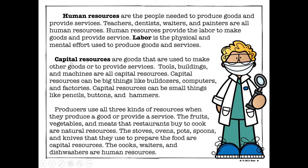The last kind is kind of like everything else — it's called a capital resource. Capital resources are goods that are used to make other goods or to provide services. Basically, if it doesn't come from nature and it's not a human, it's a capital resource. Tools, buildings, and machines are all capital resources. Capital resources can be big things like bulldozers, computers, and factories, or small things like pencils, buttons, and hammers. Remember, none of those things come from nature, and they're not a human.